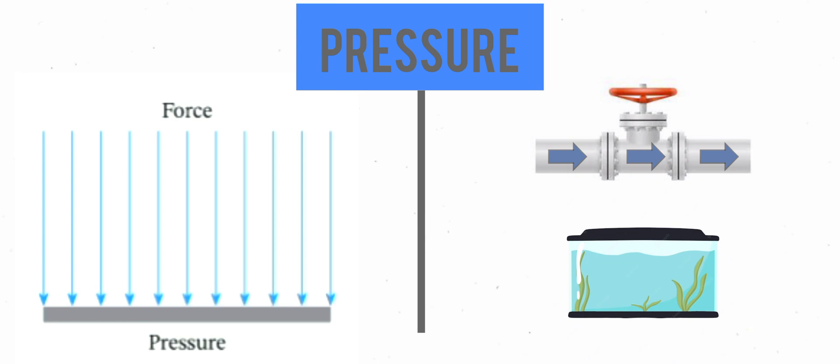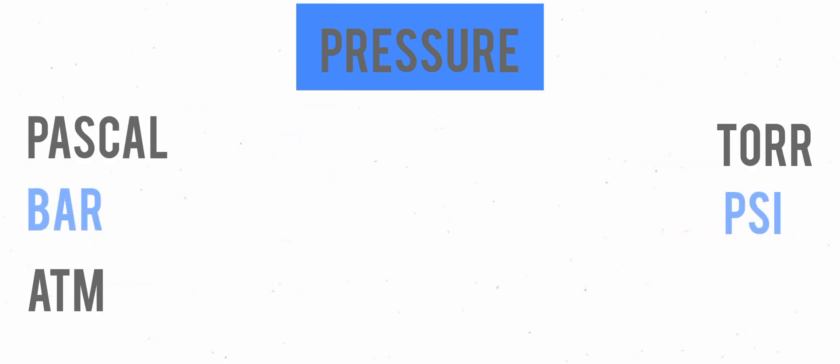Pressure is a physical quantity, it can be measured. The pressure is measured in one of the following five units: Pascal, bar, atmosphere pressure or ATM,